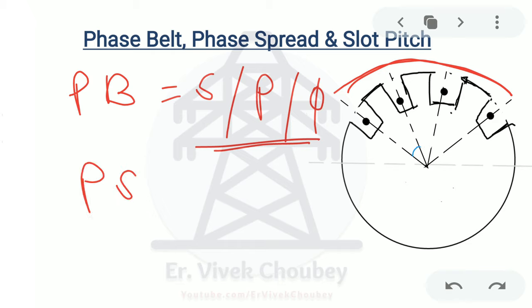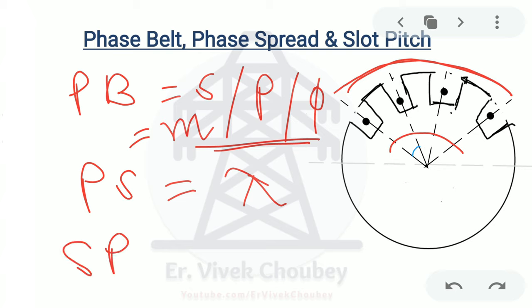Next, phase spread: as the name says, phase spread is the angle subtended by the phase belt at the center of the machine, denoted by lambda. Slot pitch, denoted by beta, is the electrical angle between two adjacent slots. When we talk about any angle in electrical engineering it is always the electrical angle, so slot pitch is the electrical angle between two adjacent slots.